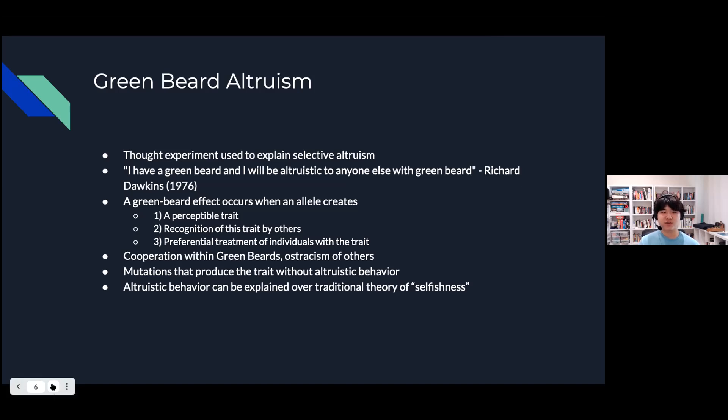However this type of genetic behavior is also dangerous because there are mutations that can occur that produce this green beard altruistic trait without the altruistic behavior, essentially leeching off of the other green beards. So in this kind of sense altruistic behavior can be explained over traditional theory of selfishness of genes and survival of the fittest.